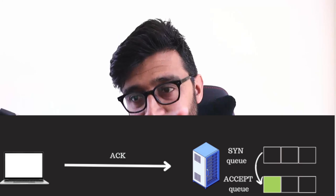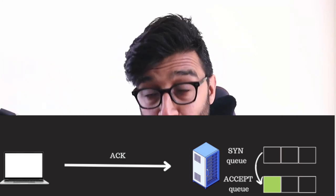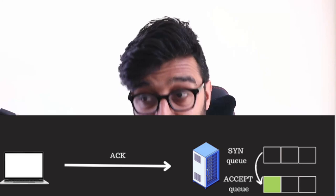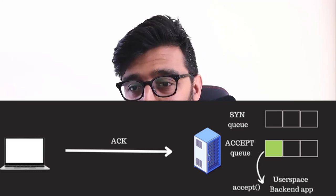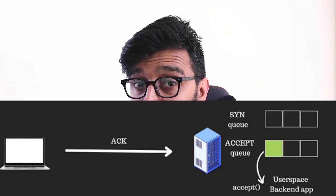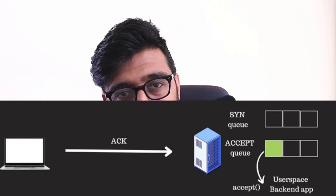Only then is an entry created in the accept queue with that connection. Up until that point we don't really have a connection — we have a ready-to-be-accepted connection. The backend application will then call a system call called accept() on that listener, which pops that entry from the accept queue. At that point the SYN has been popped, the SYN queue is now empty, and we get a file descriptor essentially representing the connection.